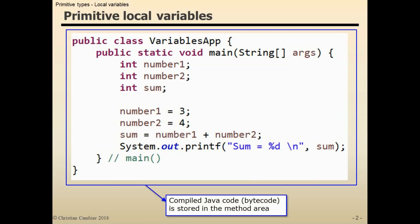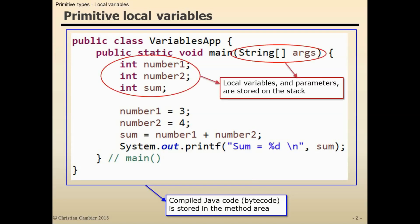That is where the compiled Java code or the bytecode is stored. The second of those managed memory areas is the stack, and the stack is the location where local variables and parameters are stored, as I'll demonstrate shortly.